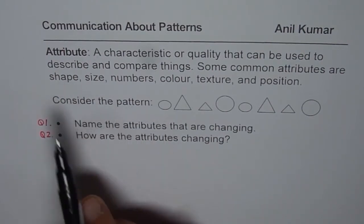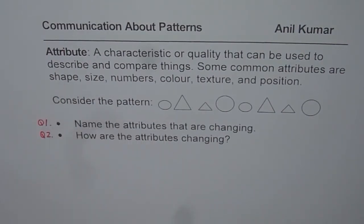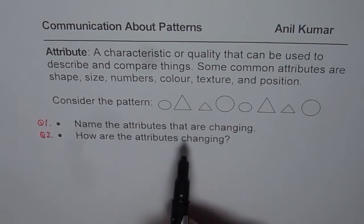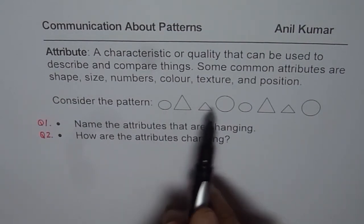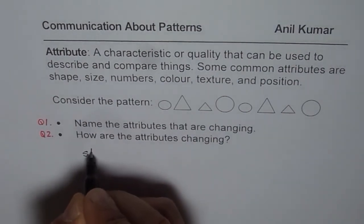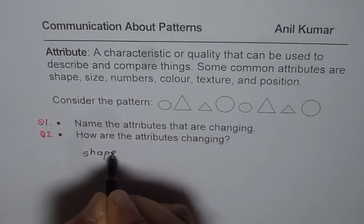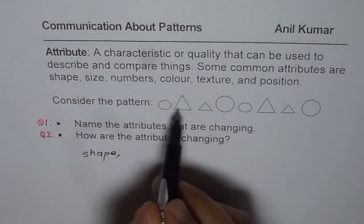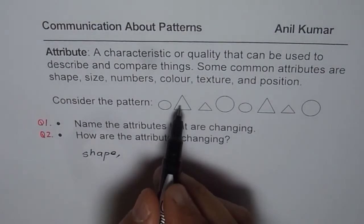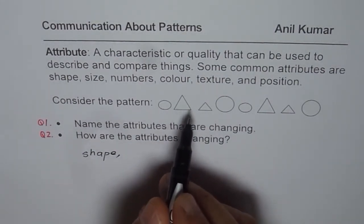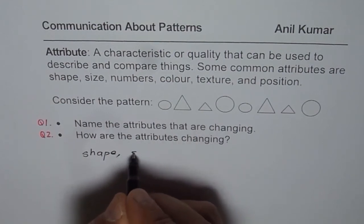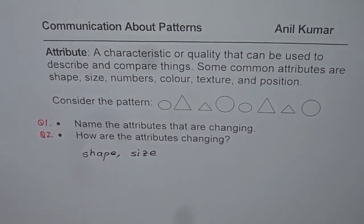As you know, attributes refer to features that are changing and that can help you to describe a pattern. So let's look into these features. One you see is the shape itself. So one feature is shape. We have different shapes, we have circle and triangle. Now these circles and triangles are of different size. So the other feature is size. Do you see that? So these are two features which are changing.